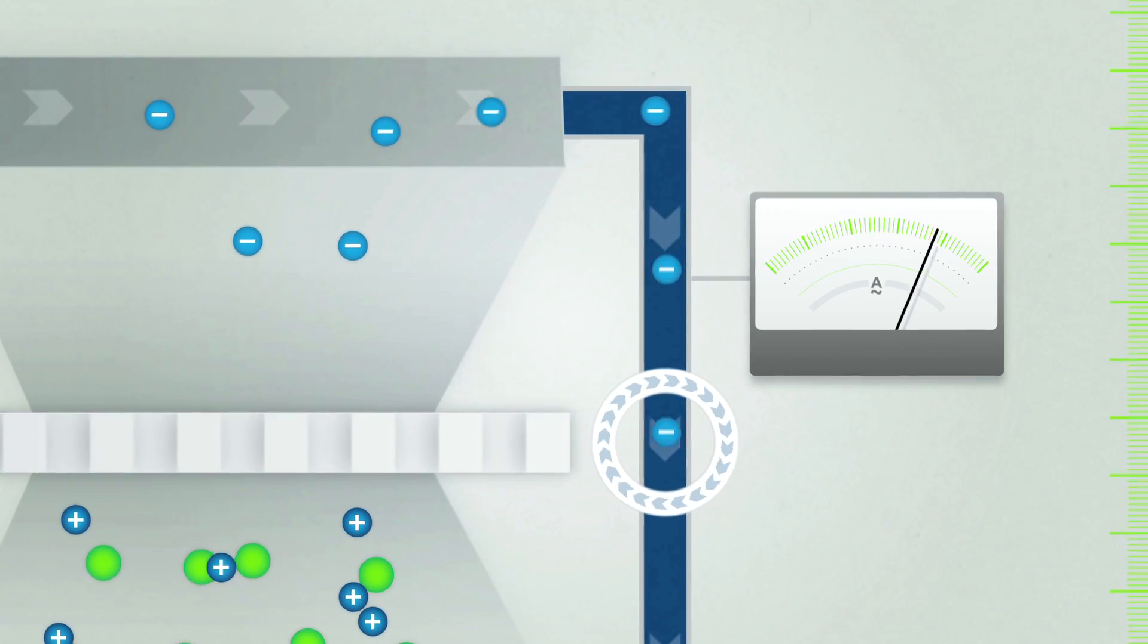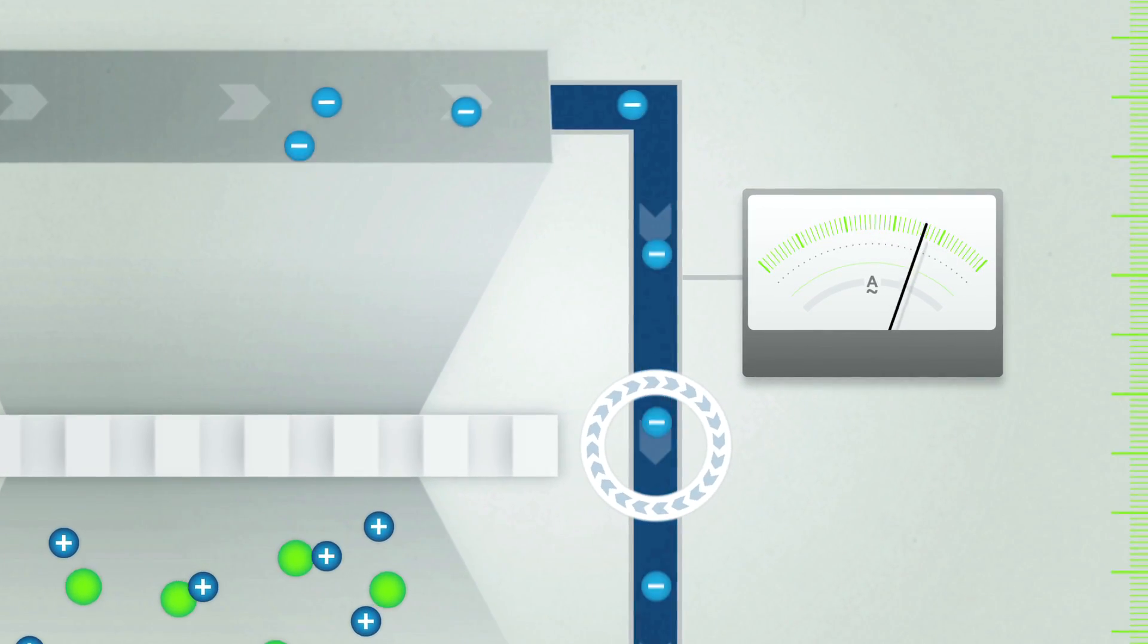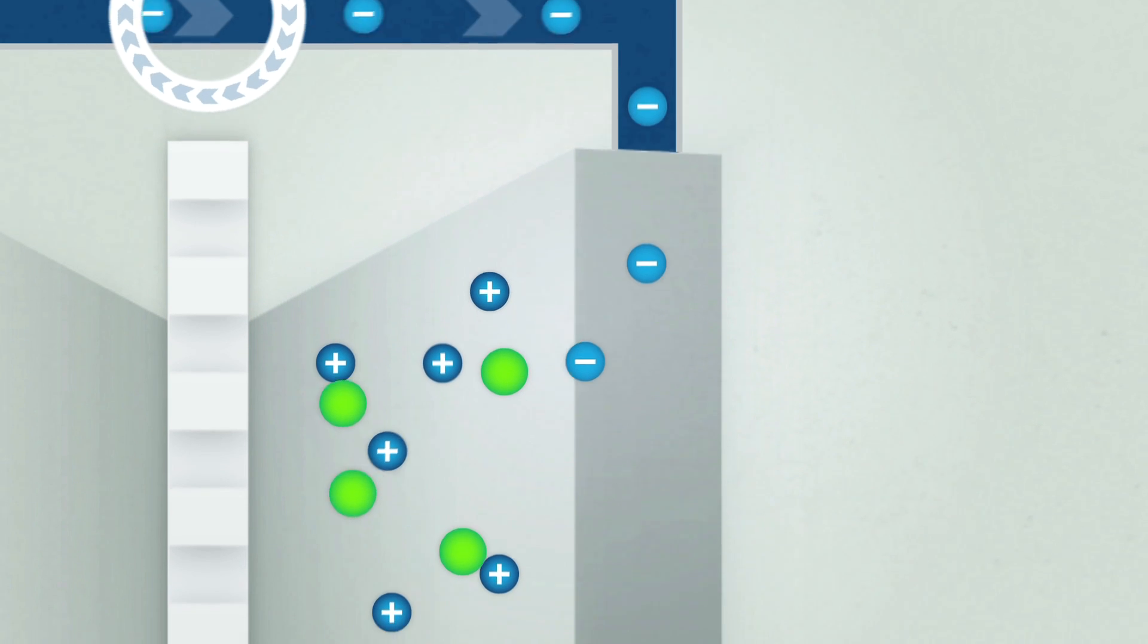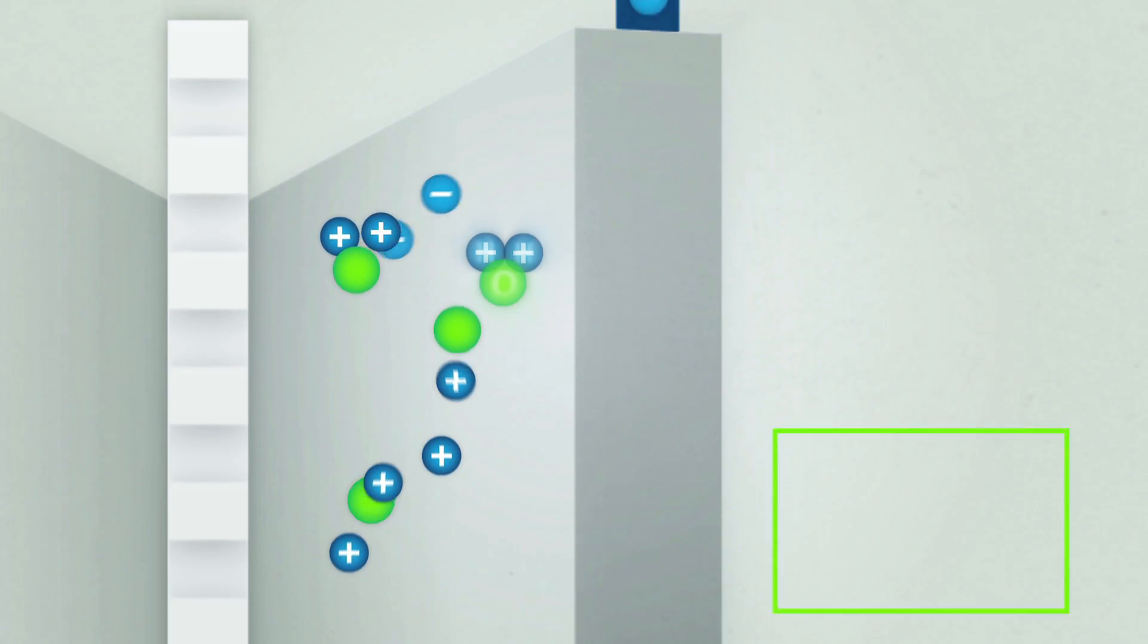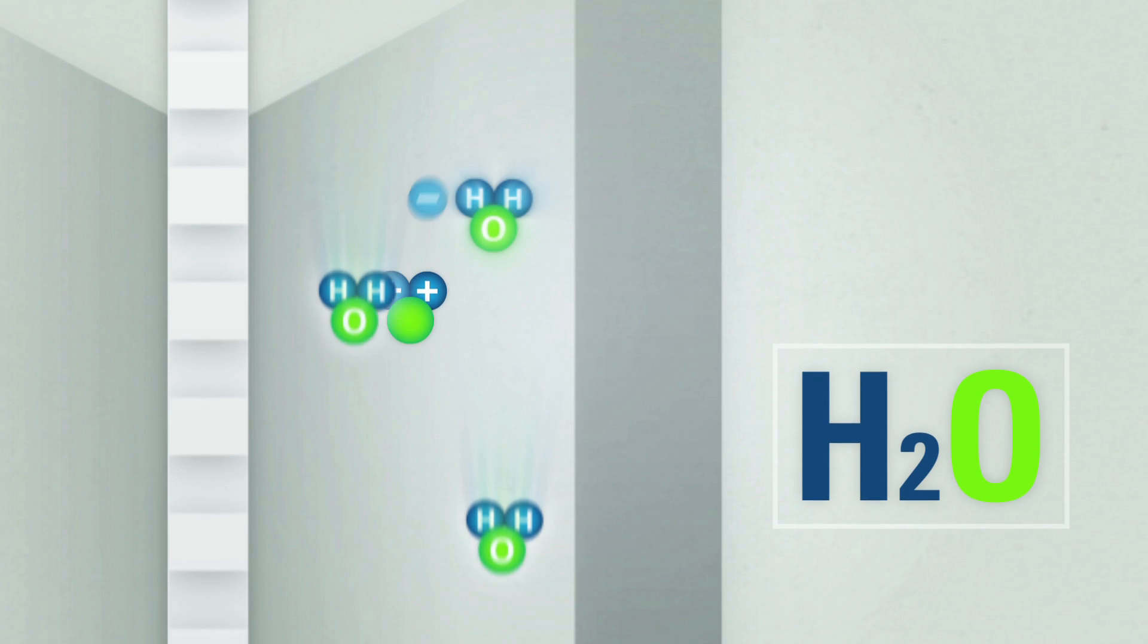The end products from the chemical reaction are power for the drivetrain and H2O, that is, pure water. This is the only emission produced by this mini power station.